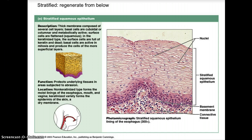The non-keratinized type forms the moist linings of the esophagus, mouth, and vagina. The keratinized variety forms the epidermis of the skin and dry membranes. In the picture here you can see the nuclei of the cells — notice how these cells have that flattened appearance. These would be the stratified squamous epithelial. Here is the basal membrane, and here is the next type of tissue we're going to cover: connective tissue.